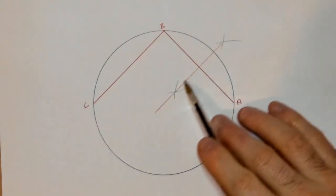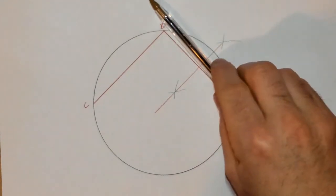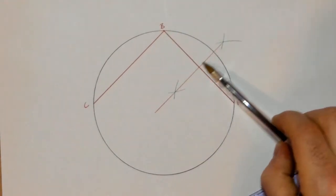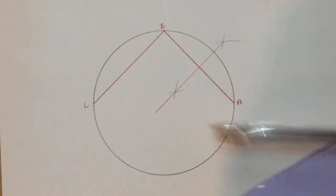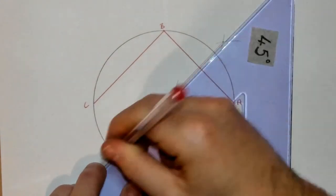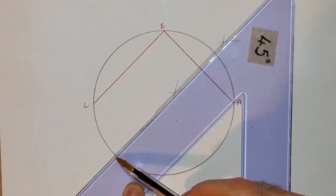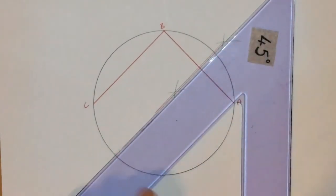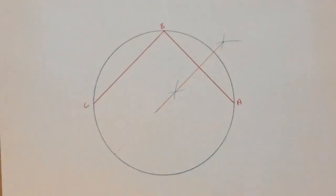Somewhere along that bisector, the perpendicular bisector of chord A, B, is going to be my center. If I was to continue that line the whole way to the opposite side, what I would actually have is a diameter line. Somewhere along that bisector is the center.